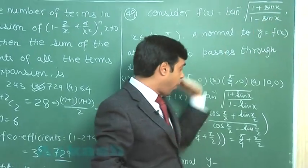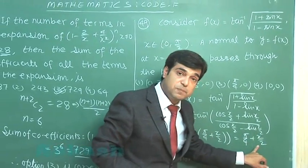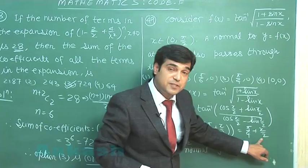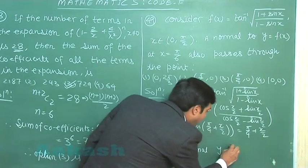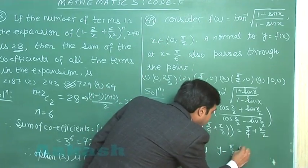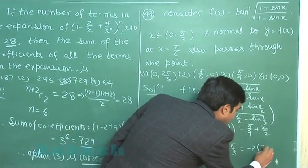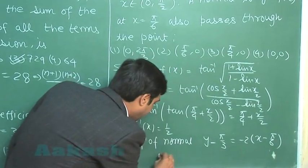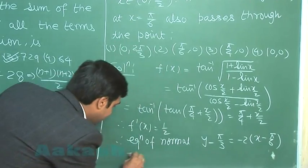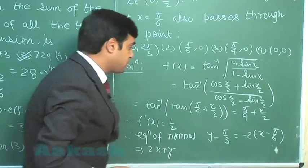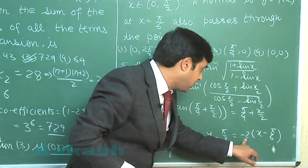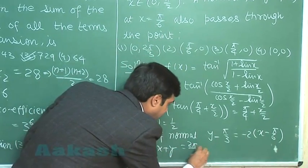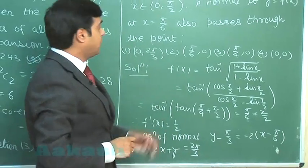Substituting x equals π/6, f(π/6) equals π/4 + π/12 which is π/3. So the normal equation is y minus π/3 equals minus 2(x minus π/6), giving us 2x + y equals π/3 plus π/3, that is 2π/3.